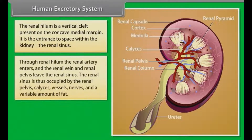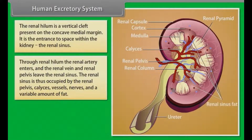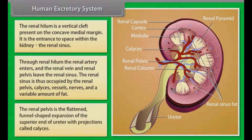Through the renal hilum, the renal artery enters and the renal vein and renal pelvis leave the renal sinus. The renal sinus is occupied by the renal pelvis, calyces, vessels, nerves and a variable amount of fat. The renal pelvis is the flattened, funnel-shaped expansion of the superior end of the ureter with projections called calyces.